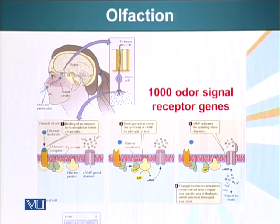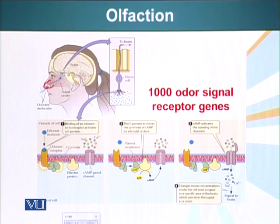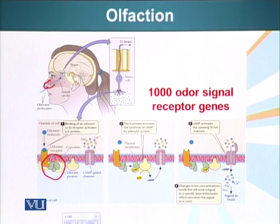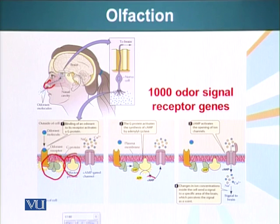We have neurons that terminate in our nose whose tips have special receptors. Mice have about a thousand different receptors for specific odor molecules. When an odor molecule binds these G-protein coupled receptors, the receptor undergoes a conformational change recognized by the G-protein, which is activated. The G-protein exchanges GDP for GTP, the alpha subunit dissociates and binds adenyl cyclase, which produces cyclic AMP.